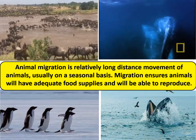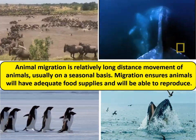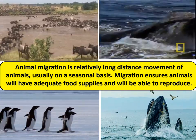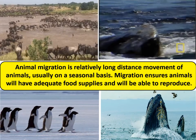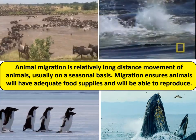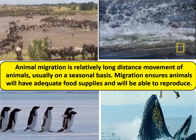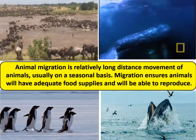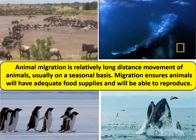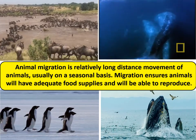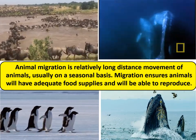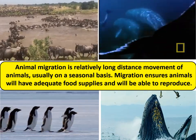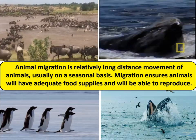Some examples of migratory animals are wild bees, Adélie penguin, humpback whale, grey whale, Siberian cranes, monarch butterflies, shark, bats, and dragonflies.